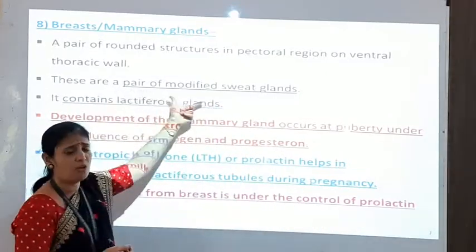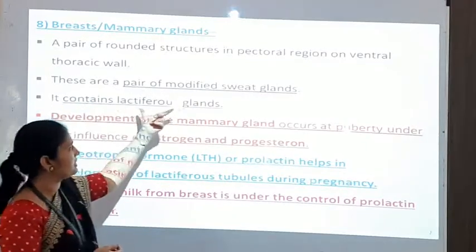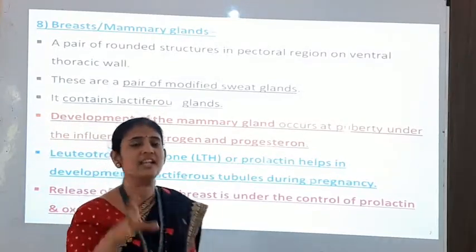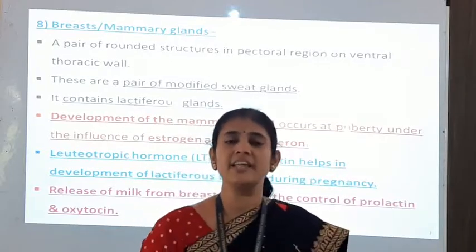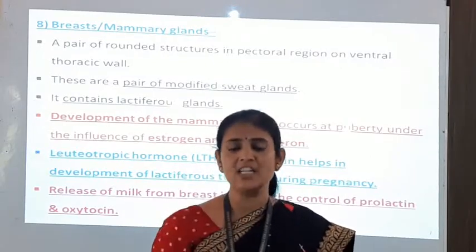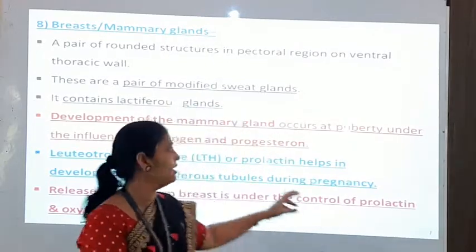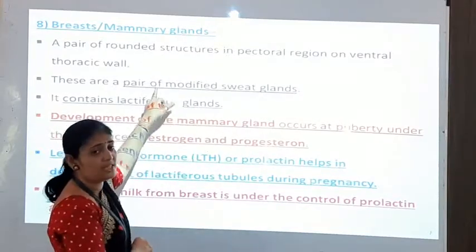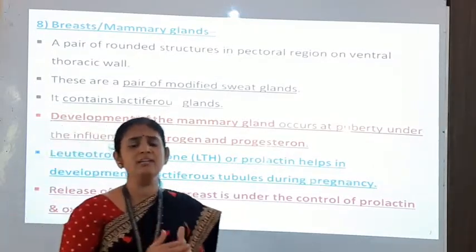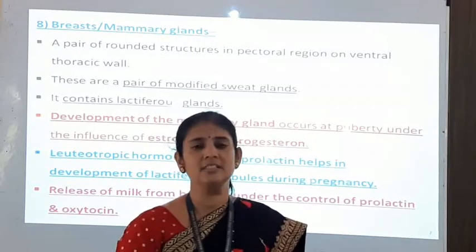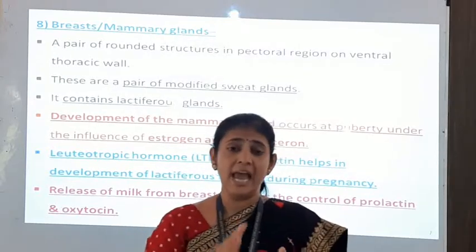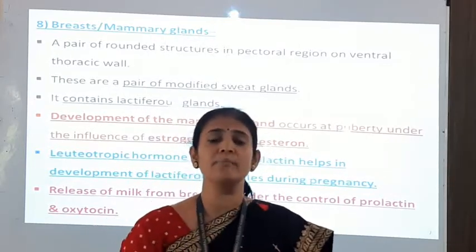The mammary glands contain glands that secrete milk; therefore they are called lactiferous glands. Milk contains lactose sugar, which is why the milk-secreting glands within the mammary gland are called lactiferous glands. Both male and female babies at birth show the same type of mammary glands, but at puberty age, the development and growth of mammary glands takes place only in females.